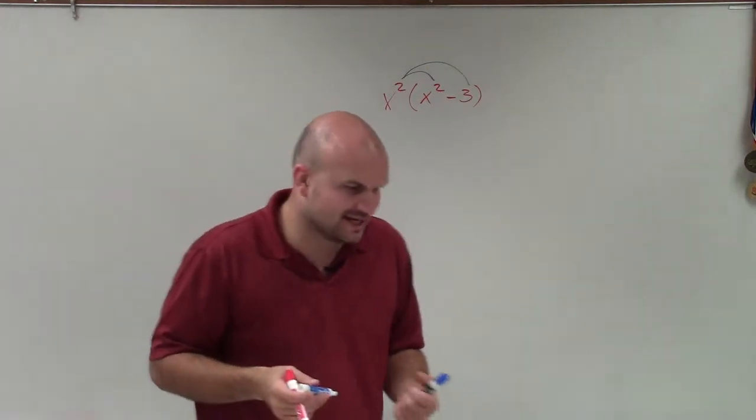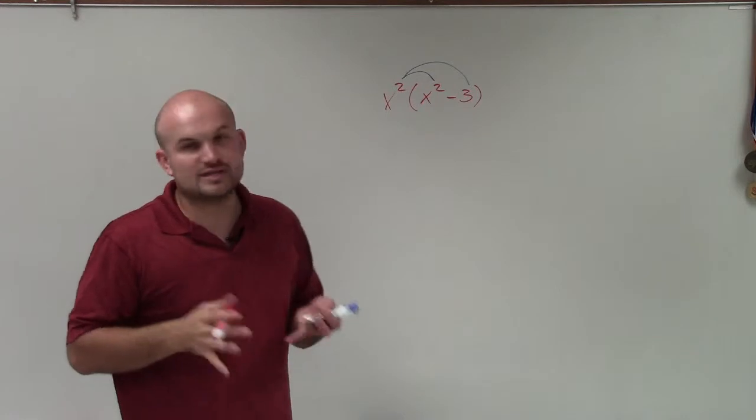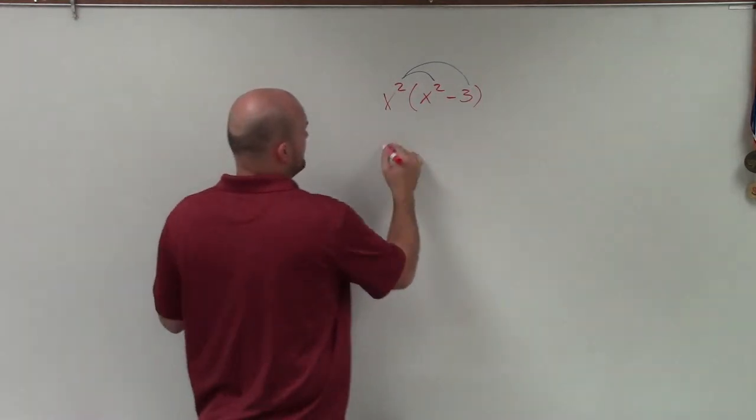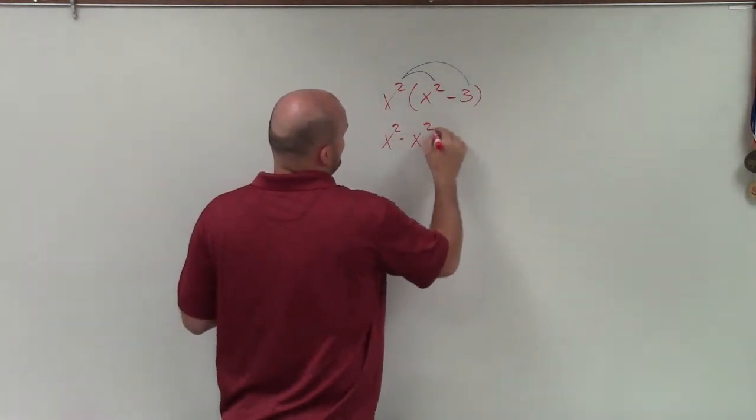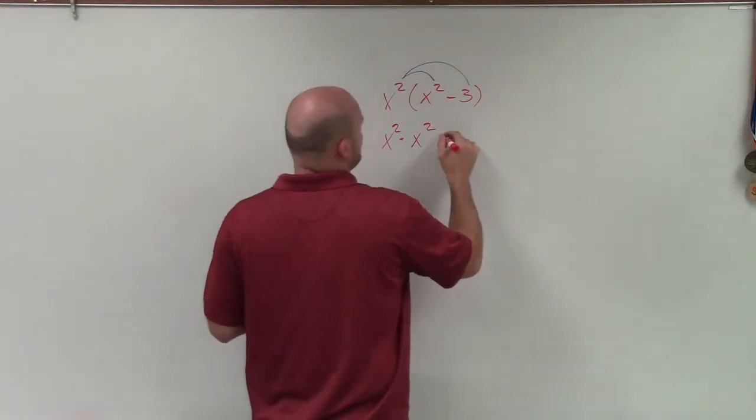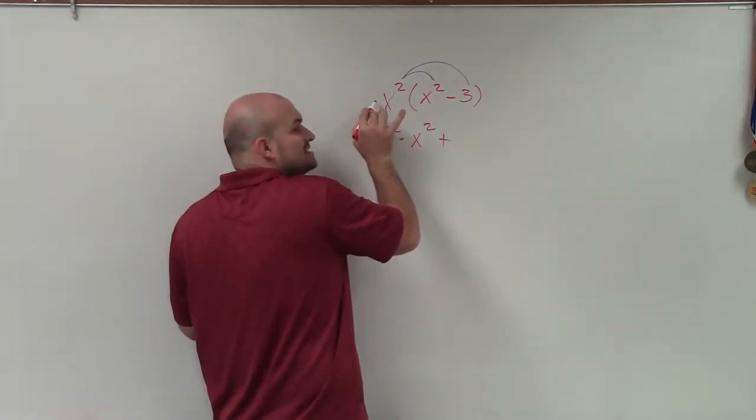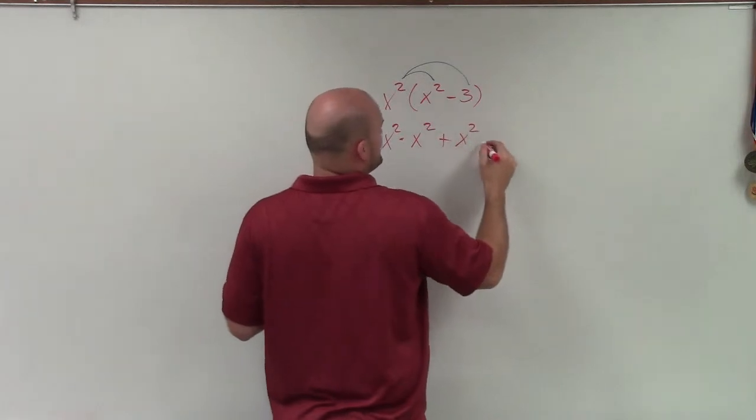The difficult part when it comes to this is using our rules of exponents. So basically, what I have is x squared times x squared, and then plus - the reason why I'm adding that is because that's a positive x squared.